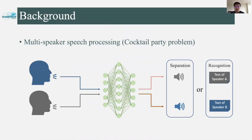First, I want to briefly introduce the background of our task. Our work focuses on the multi-speaker speech processing, which is generally called the cocktail party problem. The input is an overlapped speech signal where multiple speakers speak at the same time, and the goal is to get the separated speech signals or the text of each speaker. In this work, we use the end-to-end method to solve this kind of problem.